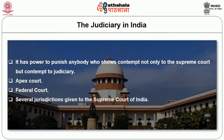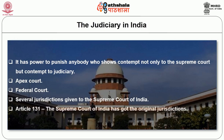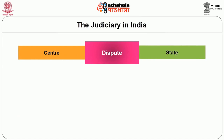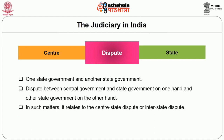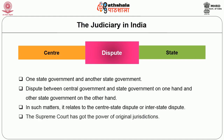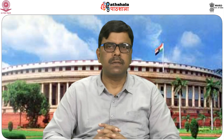Under Article 131, the Supreme Court of India has original jurisdiction. Whenever there is a dispute between the centre and a state, between one state government and another, or between the central government and state governments, in such matters relating to centre-state disputes or interstate disputes, the Supreme Court has original jurisdiction. The decision of the Supreme Court shall be binding on all concerned states and the centre.